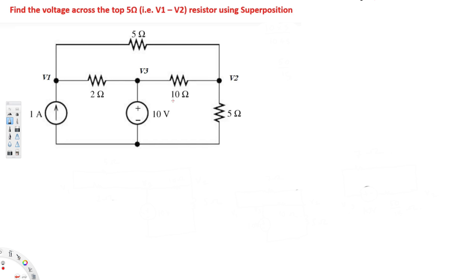In this video we are going to see an example on the superposition technique. The question asks us to find the voltage across the 5 ohm resistor. In superposition, when we have a current source and a voltage source, we remove the current source first, find the voltage, then short circuit the voltage source and find the voltage. Adding both results gives the actual voltage across the 5 ohm resistor.